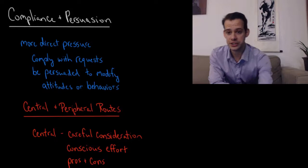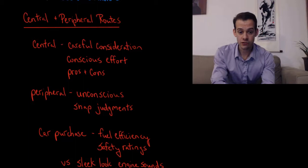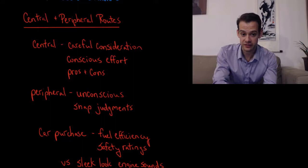Now when we think about being persuaded we can think of two routes to persuasion: a central route and a peripheral route, and this should remind you of system one and system two dual processing. The central route for persuasion refers to using careful consideration, conscious effort, weighing the pros and cons in order to make a decision. This is similar to the idea of system one conscious processing.